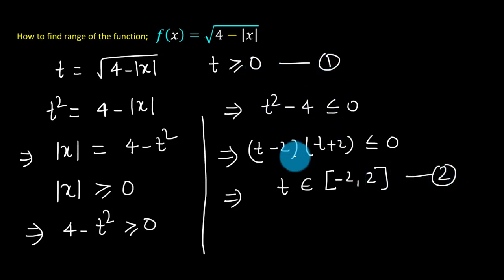Now compare equation 1 and 2. Here t is non-negative. Here t is running from negative 2 to positive 2. By taking intersection, we get t belongs to the closed interval 0 and 2.